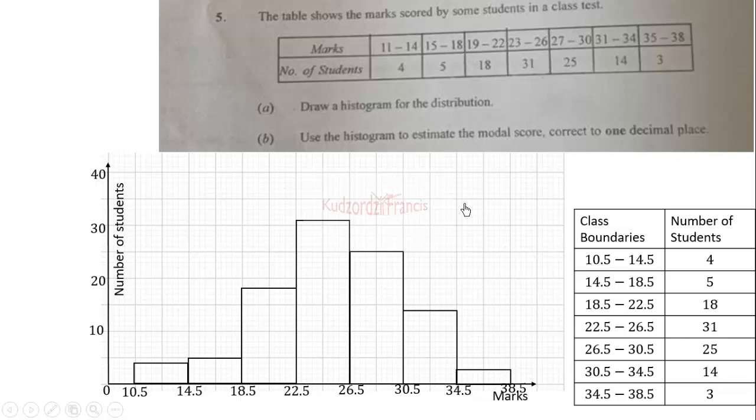To do that, we need to locate these points. We join this point to this point and this point to this point. We trace their point of intersection of these lines to the marks axis.